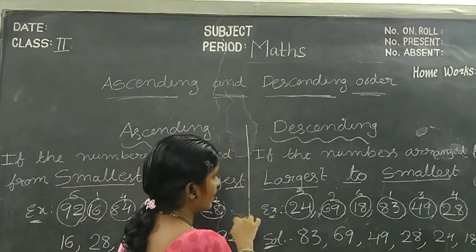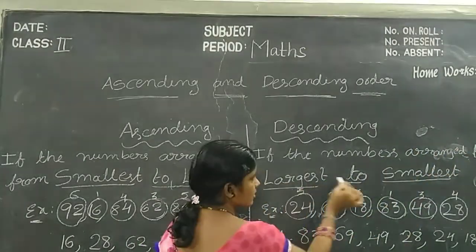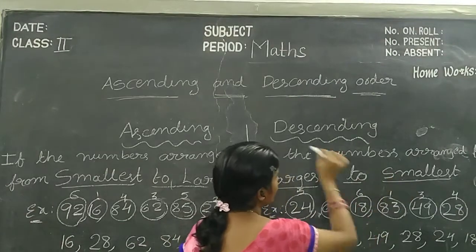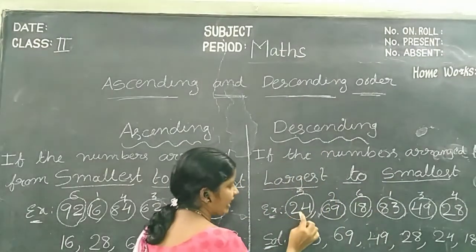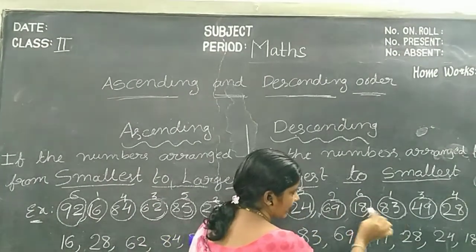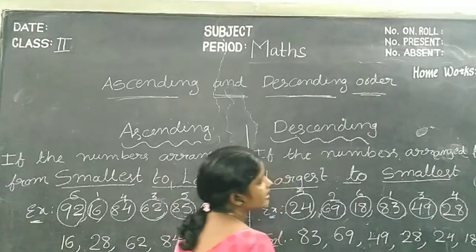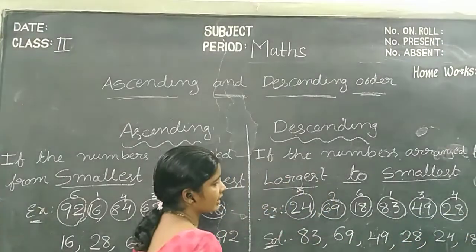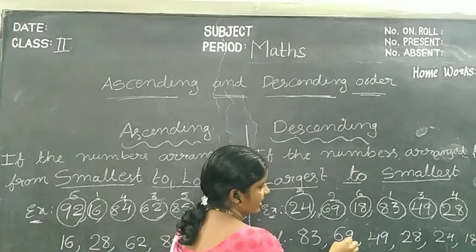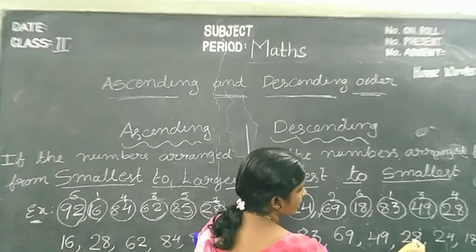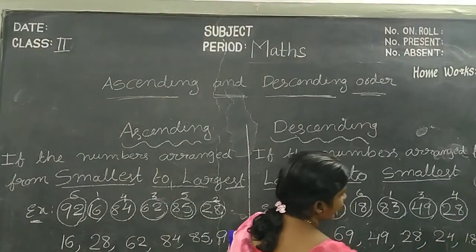Descending Order means if the numbers are arranged from largest to smallest, it is called Descending Order. See the example: 24, 69, 80, 83, 49, 28. In this example, what is the largest number, children? 83. Next number is 69. Next is 49. Next is 28. Next is 24. Next is 18.